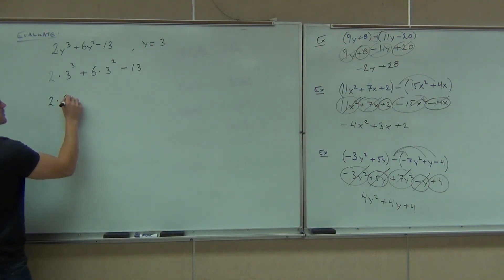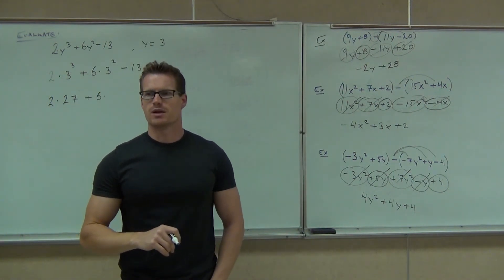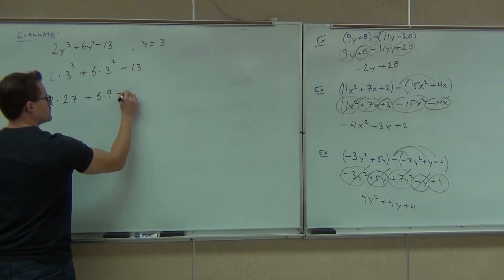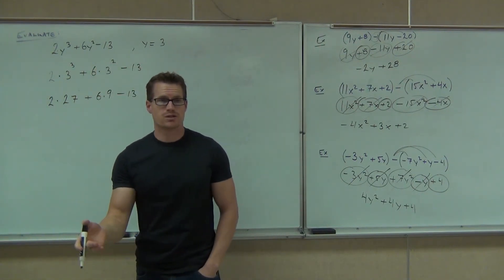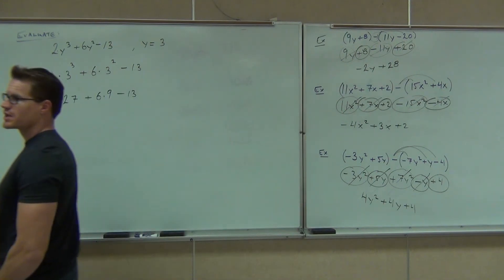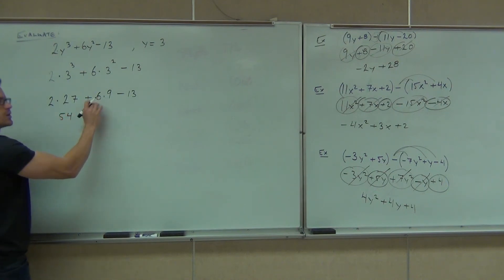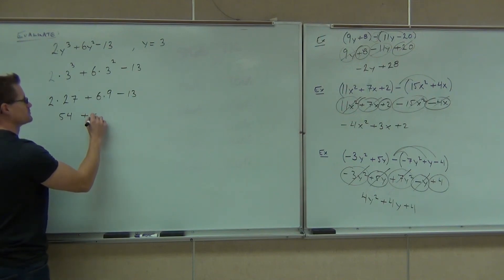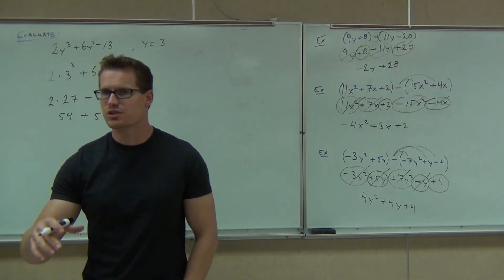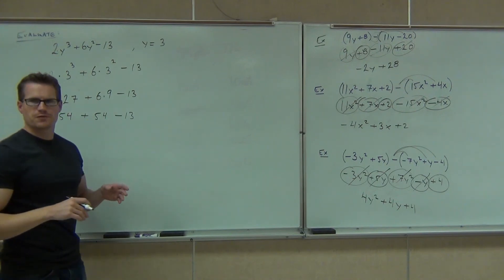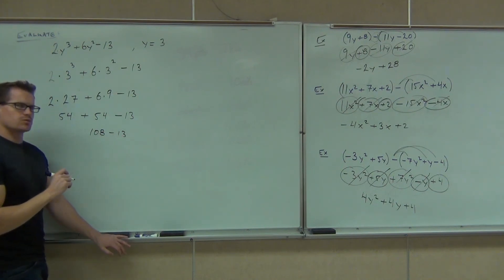Plus 6 times — what's 3 squared, everybody? 9. So we'll have 9 — minus 13, we'll hang on to that. What comes next? Multiplication. Take your calculators out if you want. What's 2 times 27? 54. Plus, what's 6 times 9? 54 — oh, that's weird. Minus 13. Now we've got addition and subtraction from left to right, so 54 plus 54 gives us 108, and 108 minus 13 is 95.